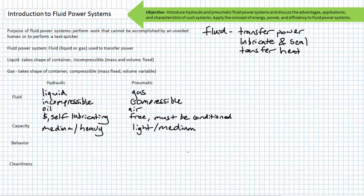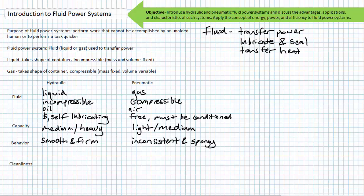Hydraulic systems are ordinarily characterized as being capable of performing medium to heavy duty applications, whereas pneumatic systems are for light to medium duty applications. Liquid, because of its inherent incompressible nature, means actuators like cylinders extend smoothly and continuously, and when in position, remain so. Gas, because of its inherent compressible nature, means actuators extend inconsistently in comparison and when popped into position are spongy and soft.